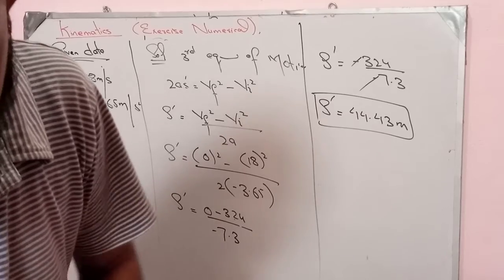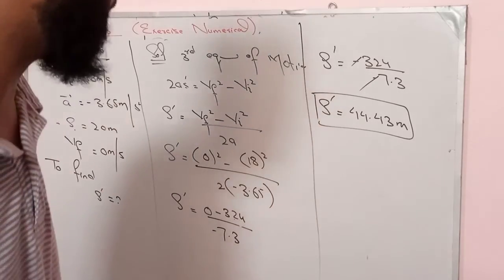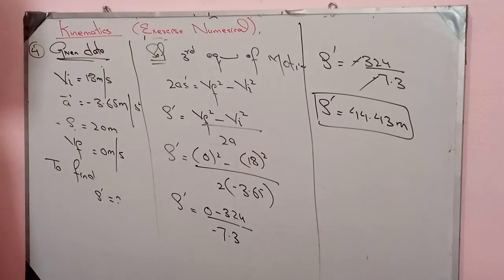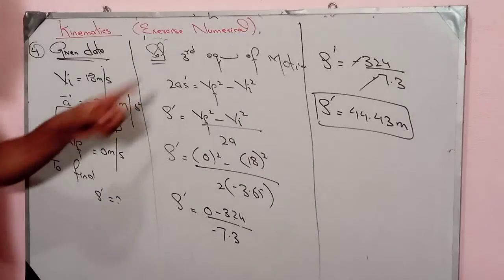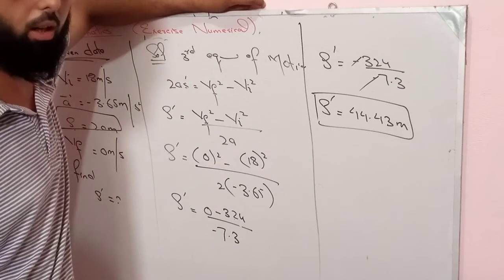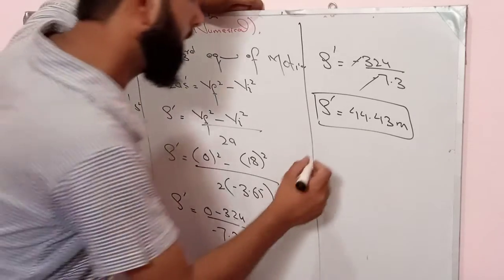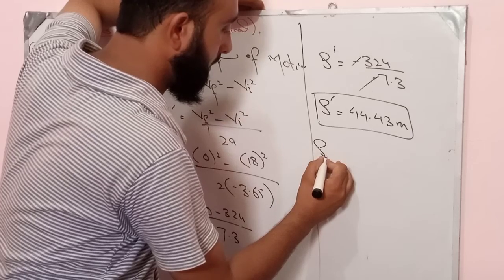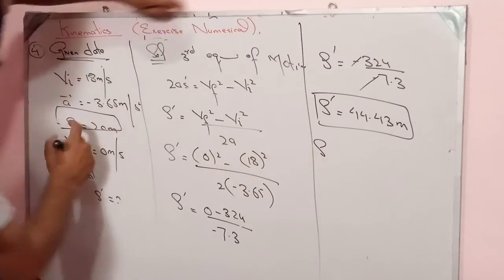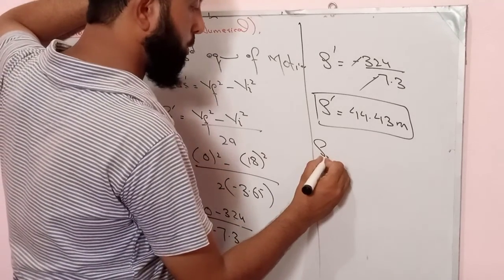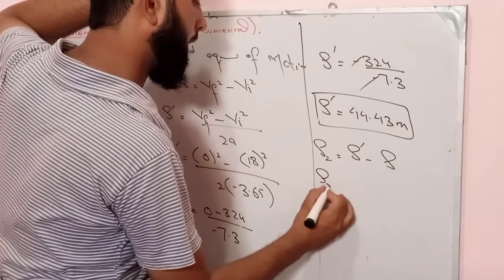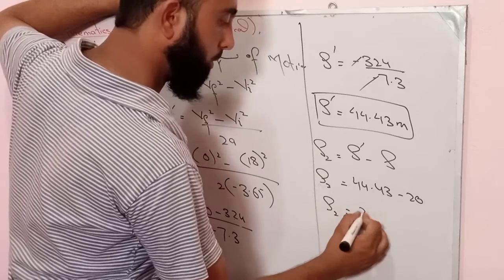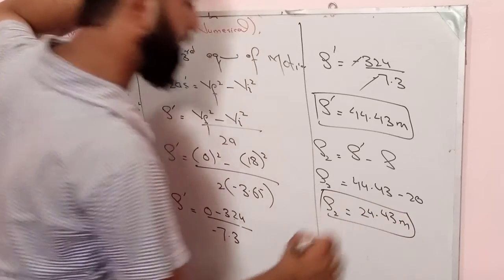If she applies brakes when she is only 20 meters from the intersection, when she sees the light, will she be able to stop in time? She has only 20 meters available but needs 44.43 meters to stop. The remaining distance S2 is 44.43 minus 20, which equals 24.43 meters. Therefore she will not be able to stop in time.